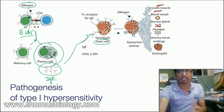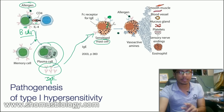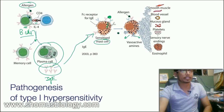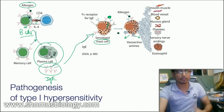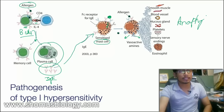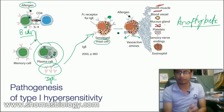IgE attaches to the surface of mast cells. When an allergen binds to two consecutive IgE molecules, it triggers downstream signaling that causes vesicles to fuse with the mast cell membrane. As the vesicles fuse, they release all their chemical components — histamine, leukotrienes, bradykinin — which act on smooth muscle, mucosal glands, and other regions, causing anaphylactic reactions including airway constriction and vasodilation.